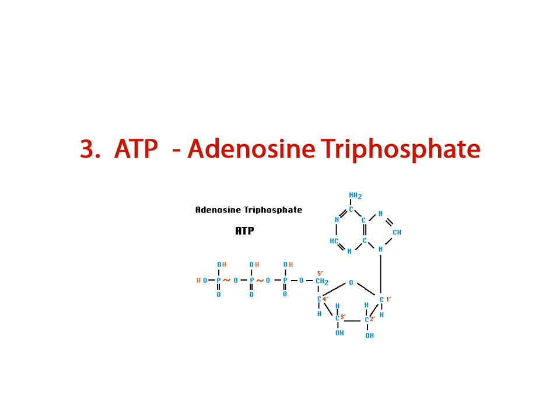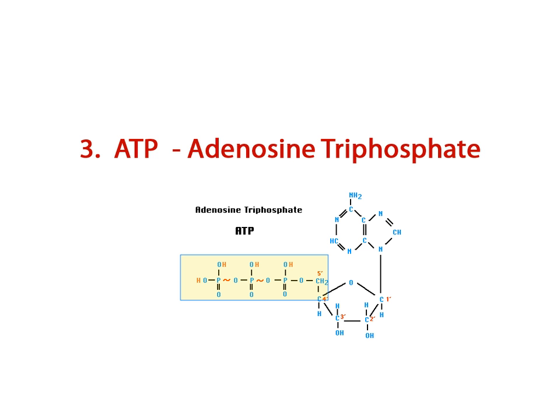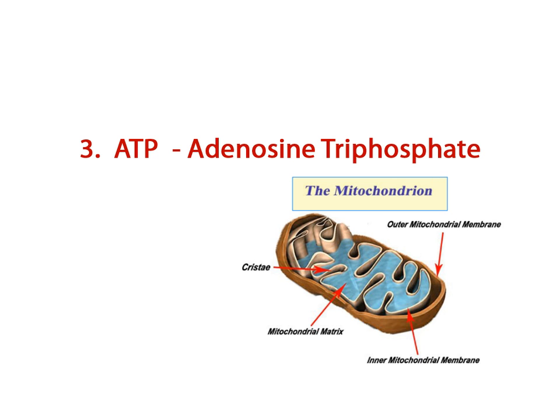So to recap here, ATP stands for adenosine triphosphate, and it is made of one sugar bonded to a nitrogenous base and three phosphate groups. It is produced in an organelle within the cell called the mitochondria and provides energy for all the activities of the cell.